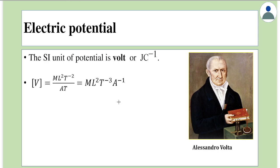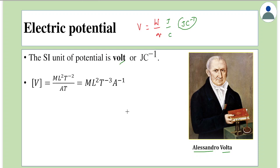The SI unit of electric potential is joule per coulomb, because work done is in joules and charge is in coulombs. This unit is called the volt, named in honor of the scientist Alessandro Volta. Dimensionally, for volt: work done has dimensions M¹L²T⁻² and charge is A·T, so the dimensions of electric potential are M¹L²T⁻³A⁻¹.